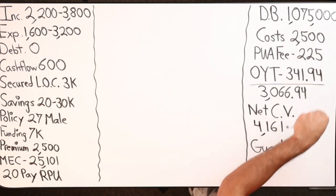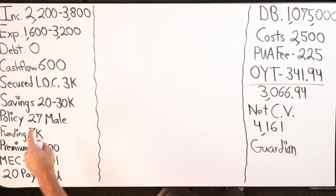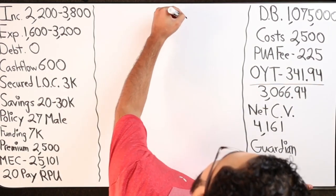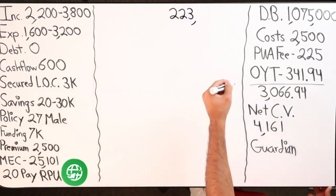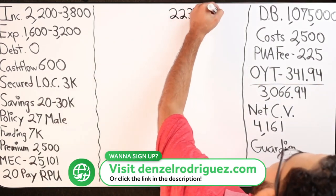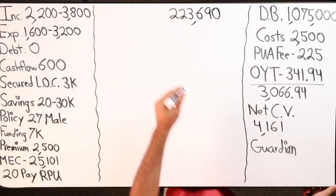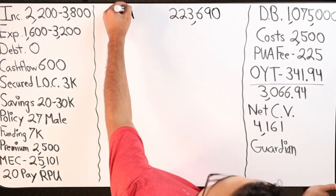For him putting in $7,000, that gives us a death benefit of $1,075,000. Of that $1,075,000, the $2,500 buys us whole life insurance. So base policy insurance of $223,690. That $2,500 buys me $223,690. That's base.